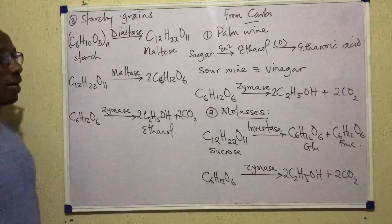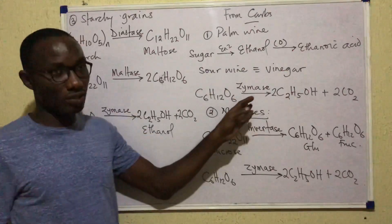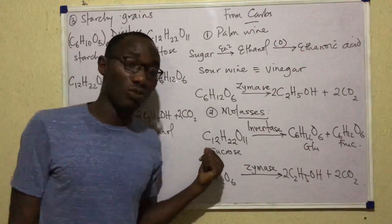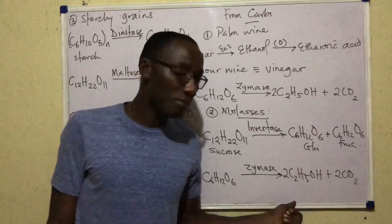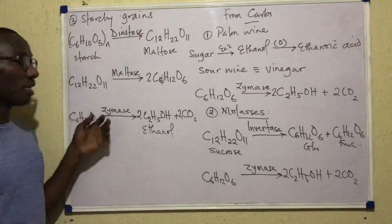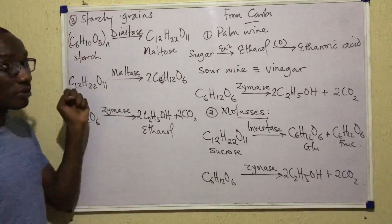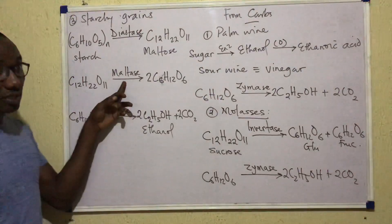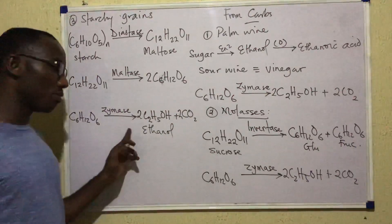To summarize getting ethanol from carbohydrates: from palm wine, just let it stand and zymase does its work. From molasses, hydrolyze sucrose first with invertase to give monosaccharides, then zymase converts them to ethanol. From starch, there are three steps: diastase hydrolyzes starch to maltose, maltase breaks maltose to glucose, and zymase converts glucose to ethanol.